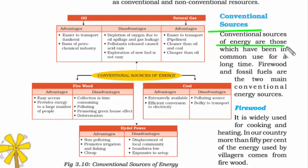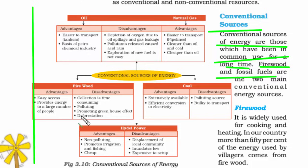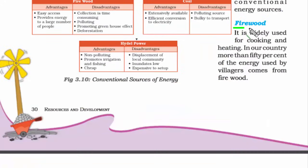Conventional sources are those energy resources which have been common for a long time — for example, firewood and fossil fuels. We have been using these for a very long time. Firewood is widely used for cooking and heating and is still used by villagers to this day.